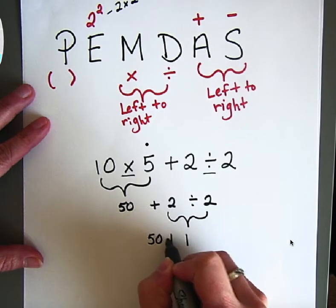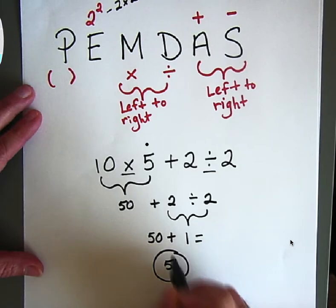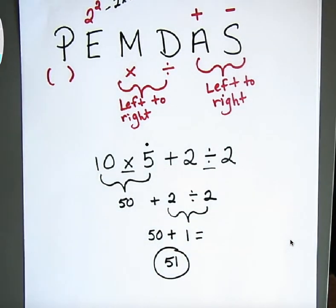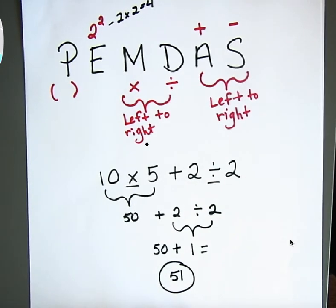Then I will rewrite the equation or the expression. And my answer is 51. And that's how you follow the order of operations for a problem like this.